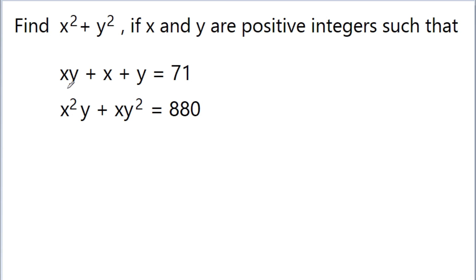In this video, we have given that xy minus x minus y is equal to 71 and x squared y minus xy squared is equal to 880, and we have to find the value of x squared minus y squared, where x and y are positive integers.